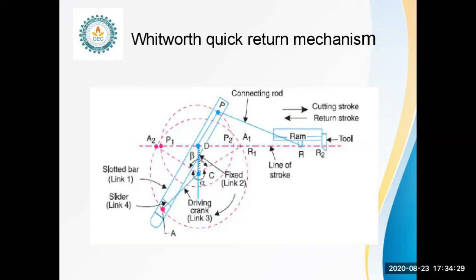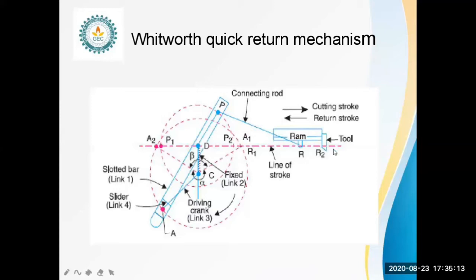The link CD forming the turning pair is a fixed driving crank. CA rotates at uniform angular speed, and the slider attached to the crank pin slides along the slotted bar BA, which is pivoted at D. The connecting rod P carries the RAM at R, to which a cutting tool is fixed. The motion of the tool is constrained along the link RP produced, and the total length of the stroke is 2PD.